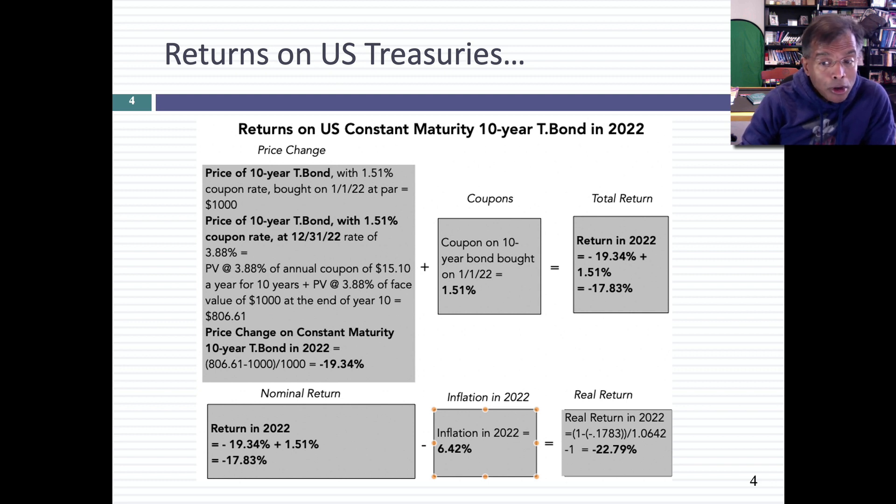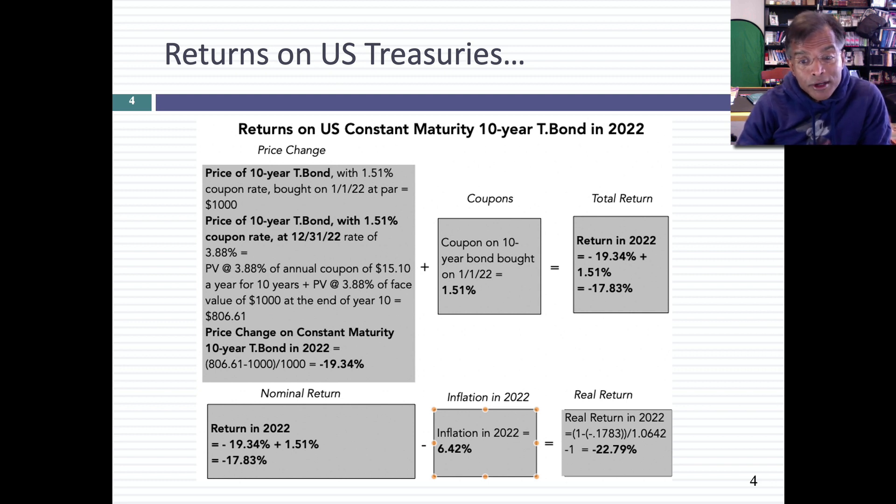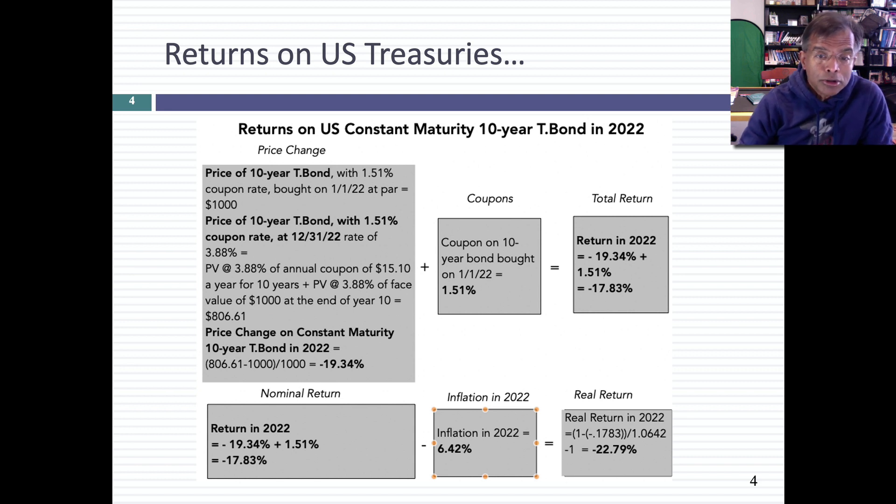In real terms, the damage was even worse, because if you make a nominal return of minus 17.8% in a year where inflation was 6.42%, the real return on T-bonds was close to minus 23%. It was a terrible year to be holding long-term bonds. And if you had bought a 30-year bond, the damage would have been even greater because of the longer maturity.